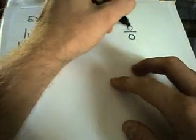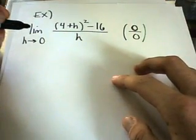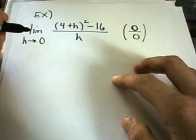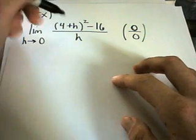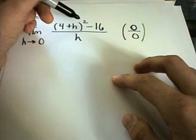So we'll get 0 on top, and clearly we're getting 0 on the bottom. So we have to do something algebraic to try to figure out what's going on here. Notice, the only thing that I see right off the bat, at least,